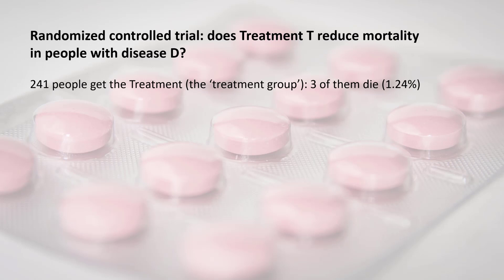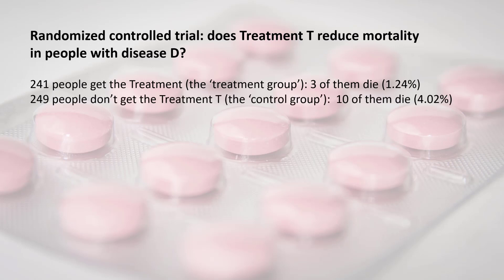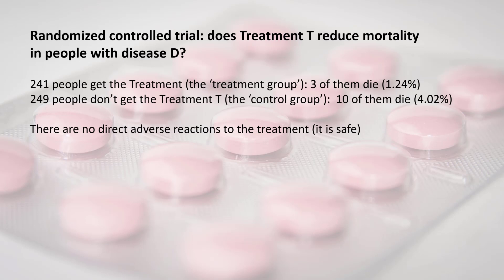As in any randomized controlled trial, people were randomly assigned to a treatment group or control group. Two hundred and forty-one people randomly selected ended up getting the treatment — that's the treatment group — and three of them died, that's 1.24%. Two hundred and forty-nine people didn't get the treatment — they're in the control group — and ten of them died, that's 4.02%. We know there are no direct adverse reactions to treatment, so it's considered safe.